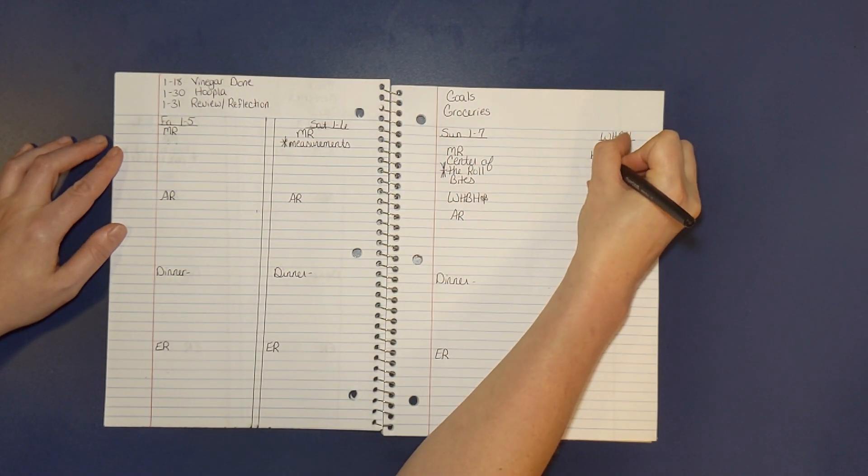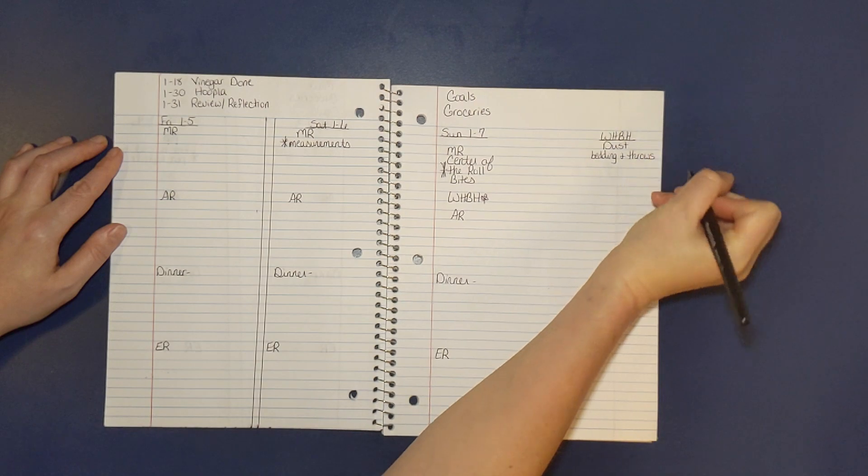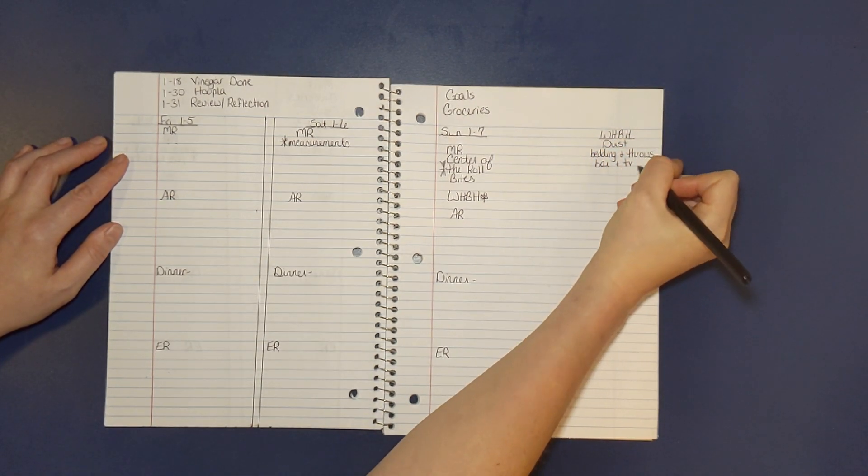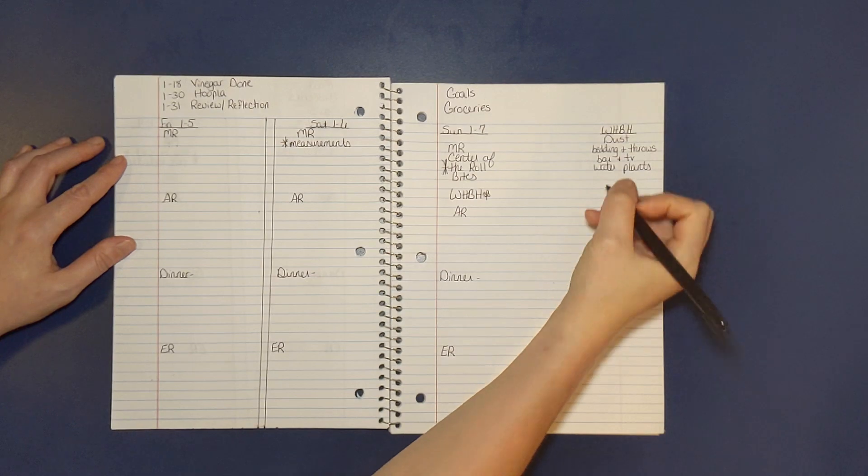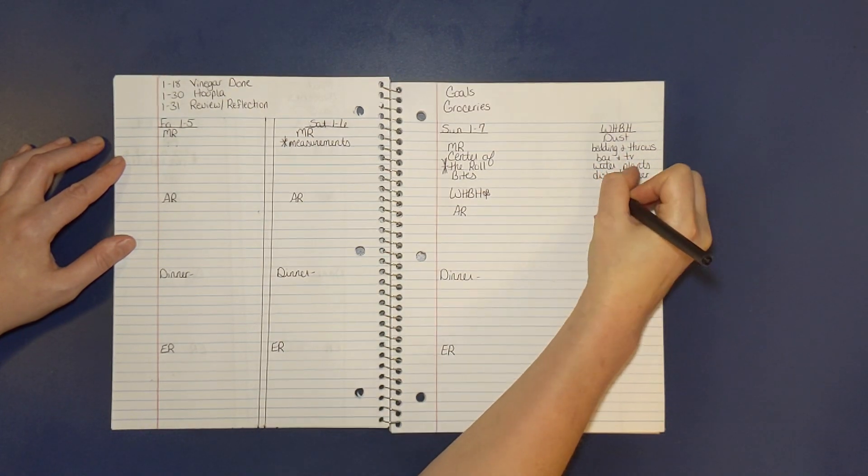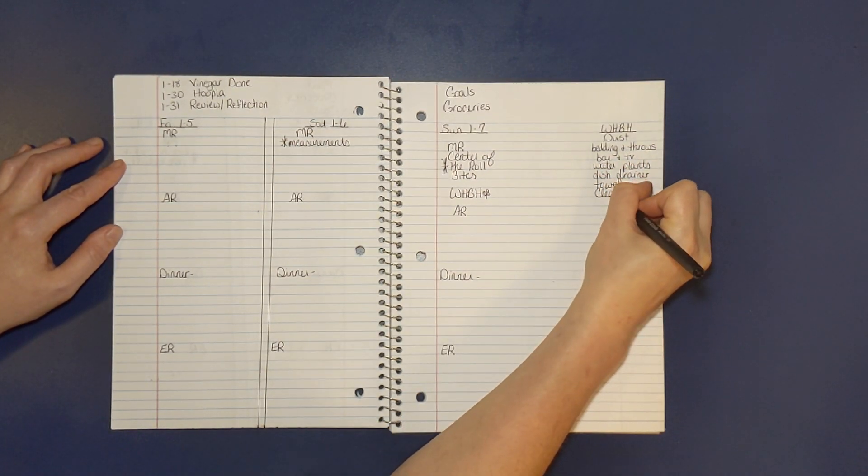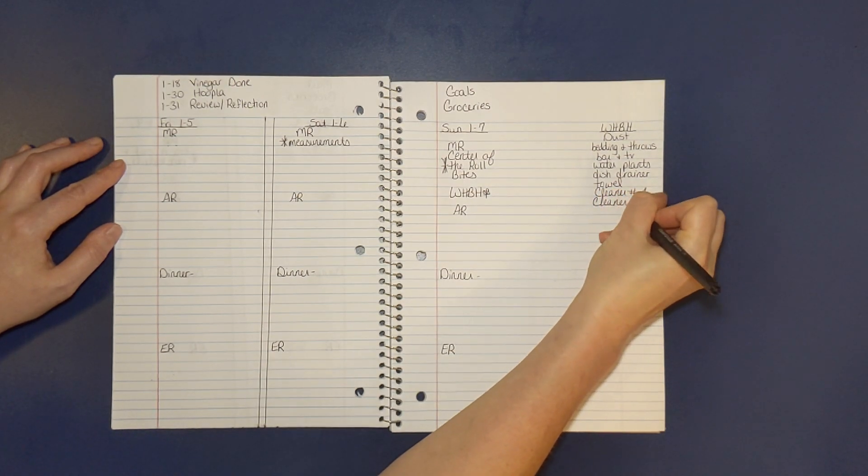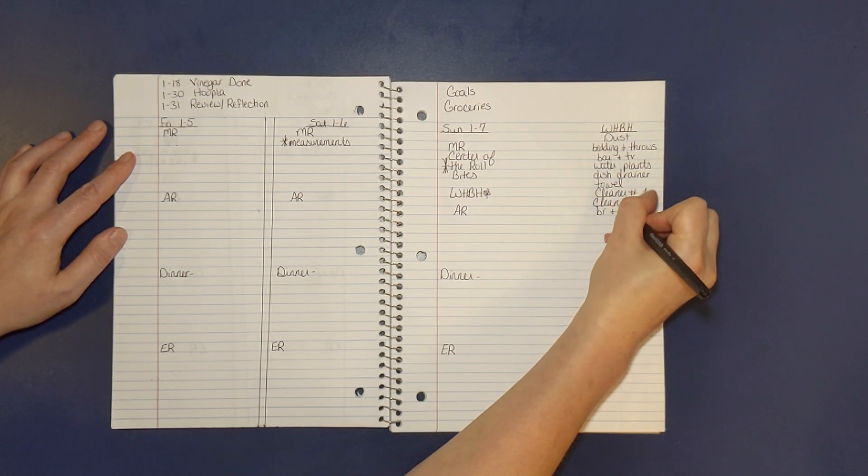For my Flylady weekly home blessing hour, I dust, wash all the bedding and throws, clean the bar and TV. I also water my plants, and since it's the winter, I don't water all of my plants every week, so I keep notes here so I don't overwater them.